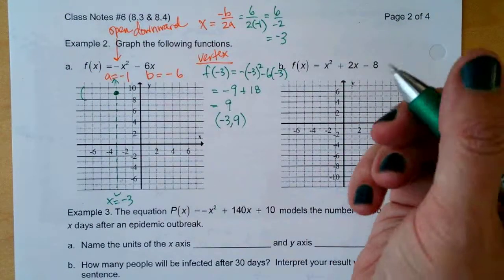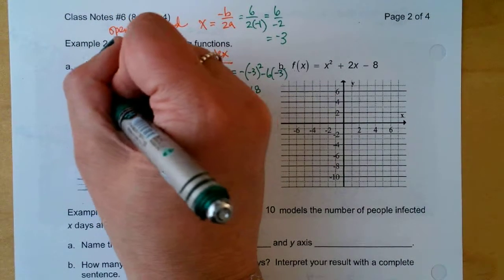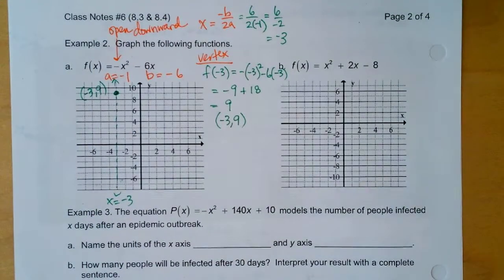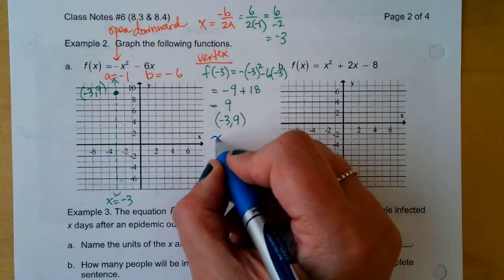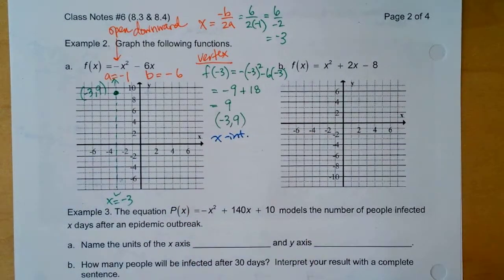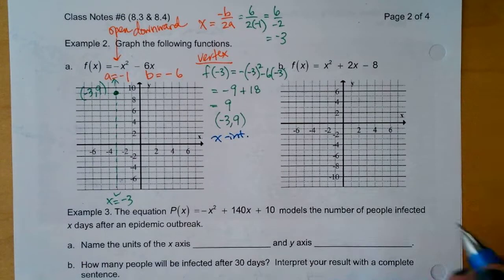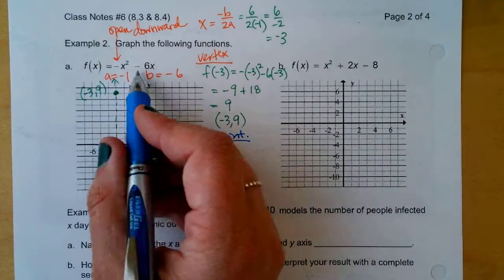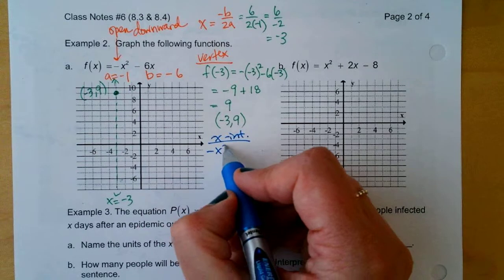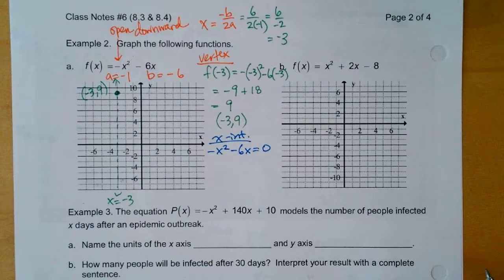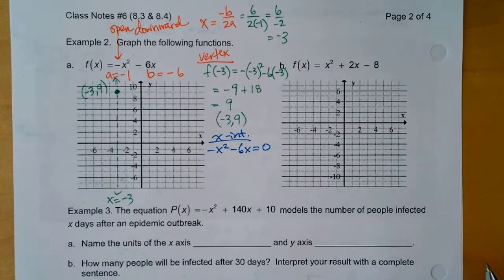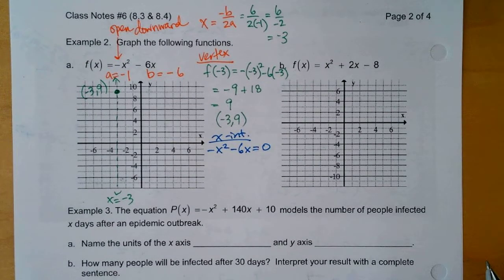So let's plot and label. Because on your exams it will say plot and label. A lot of people will plot and then they won't label. And it's like, but it said plot and label. Okay, what about the X intercepts? What's the X intercept of this? What would I do? Set the equation equal to 0 and solve. Solve by factoring.